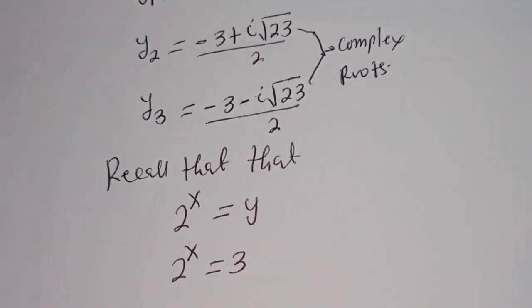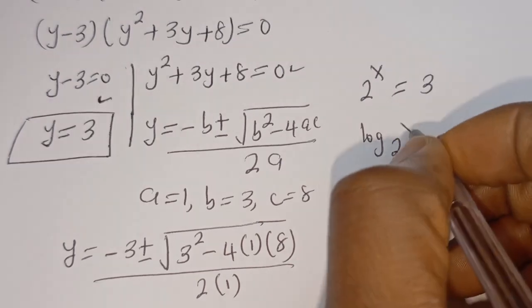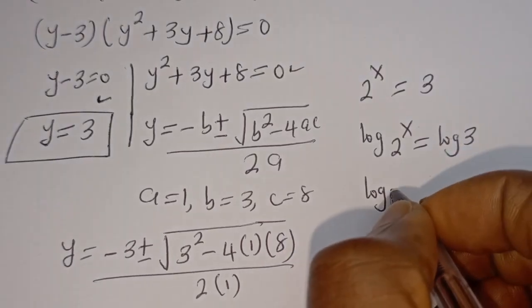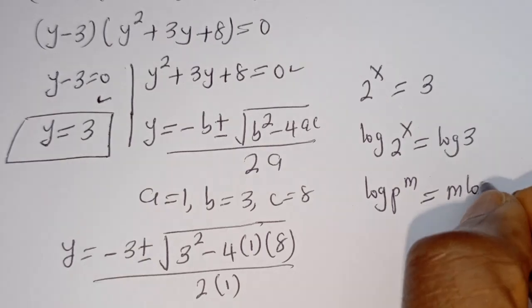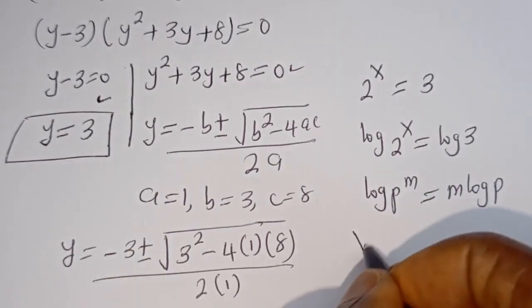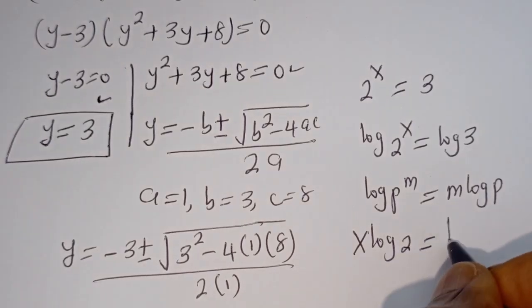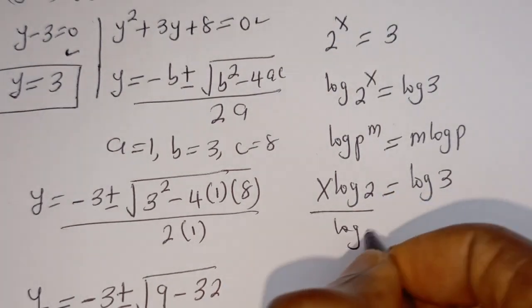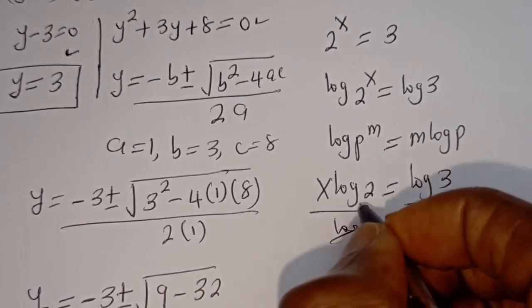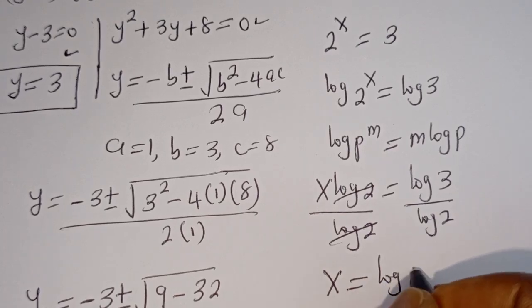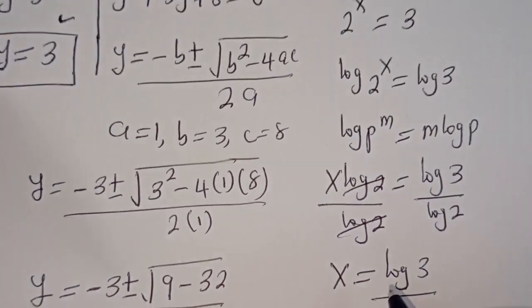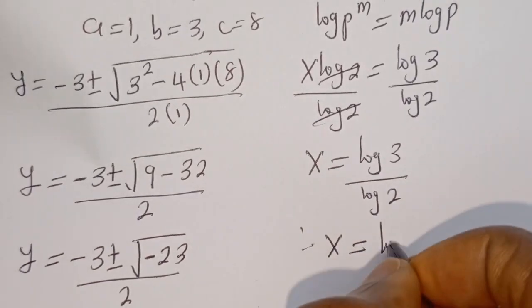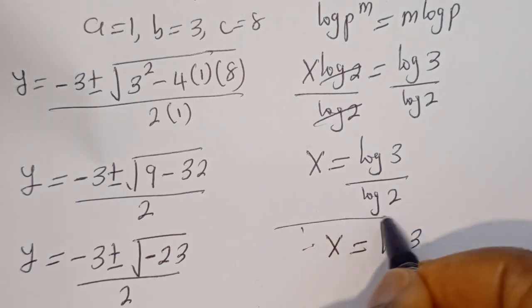Now let's take the log of both sides. We have log of 2 to the power of x is equal to log 3. This can be written as x times log 2 is equal to log 3. Then let's divide both sides by log 2. This cancels, leaving x is equal to log 3 over log 2. Therefore x is equal to log 3 base 2, and this is the final answer.